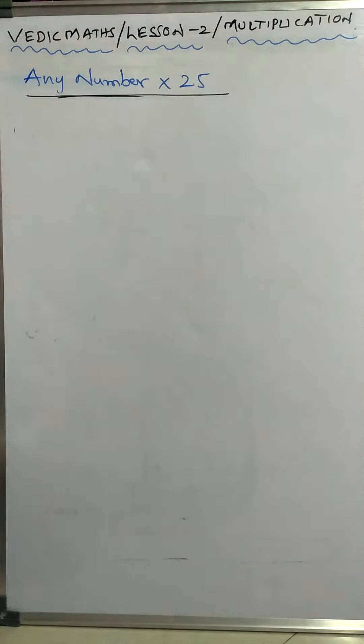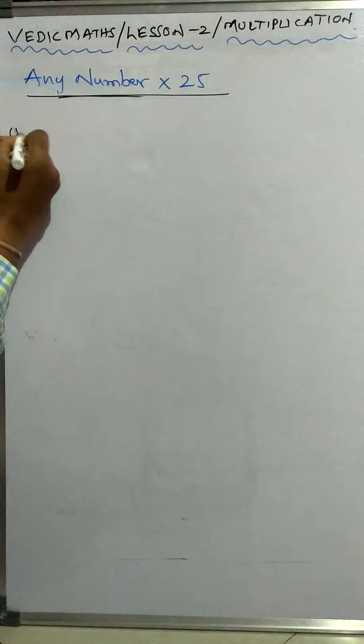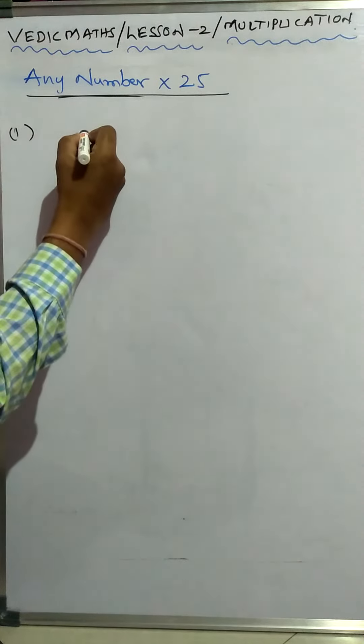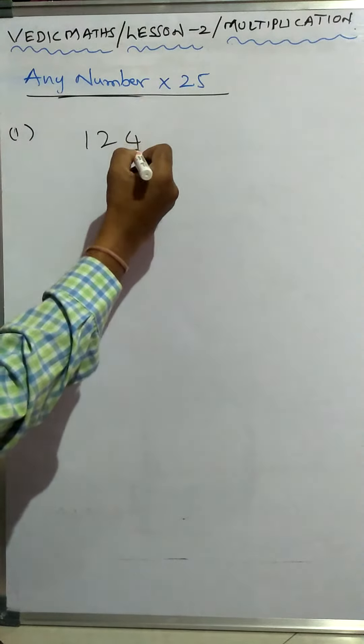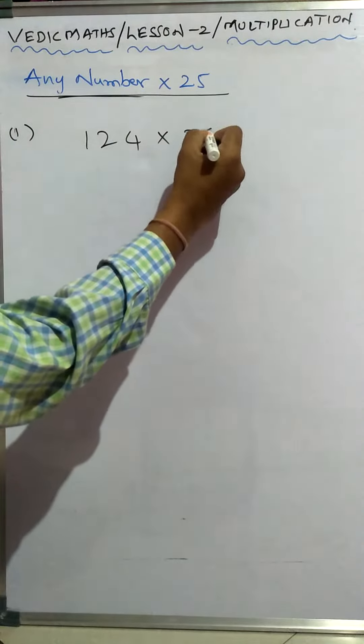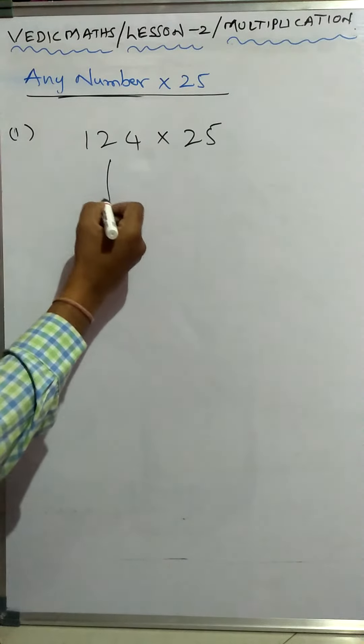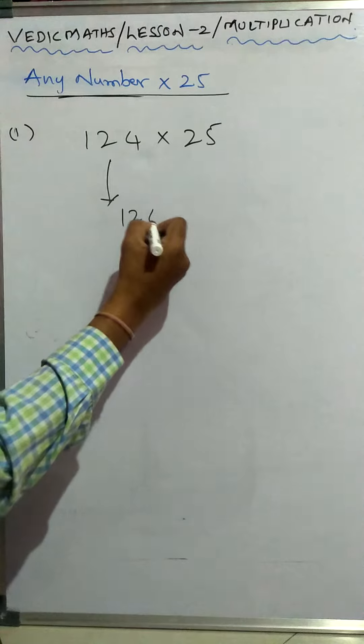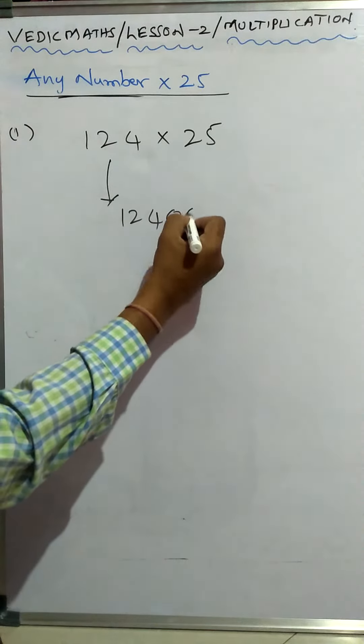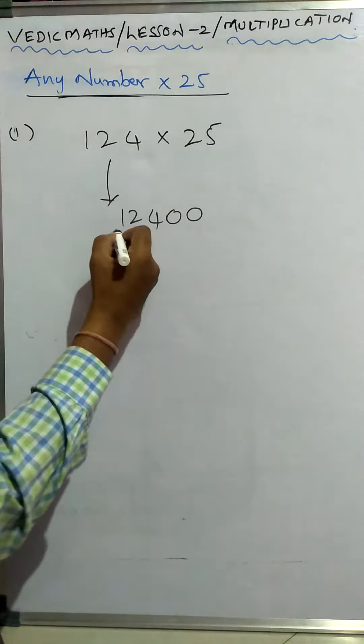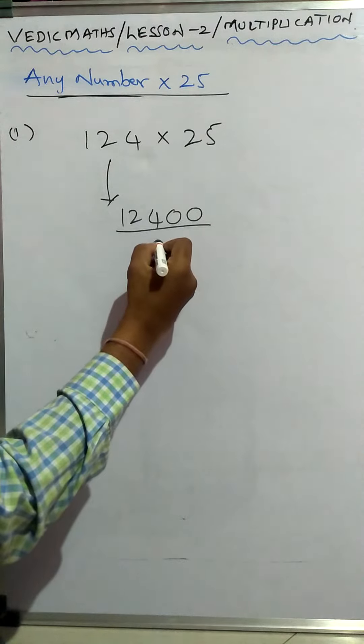Now we see any number into 25 in Vedic method. See one example, suppose you take 124 into 25. Just first you write this number as it is and put two zeros, and next step you divide it by four.